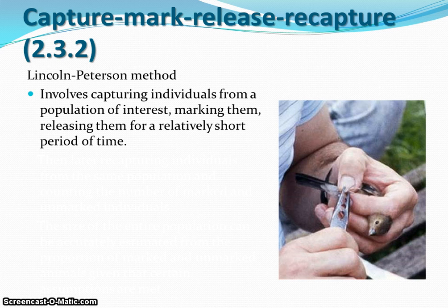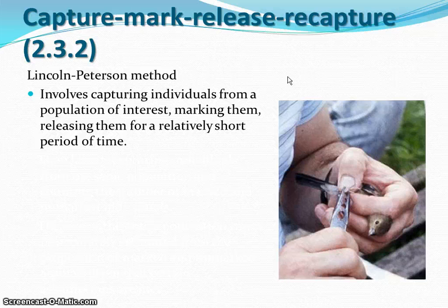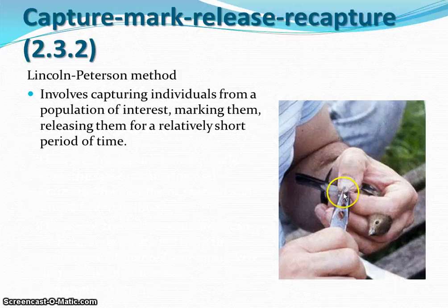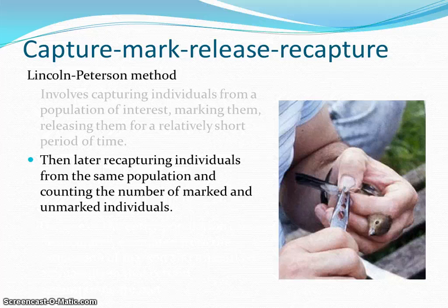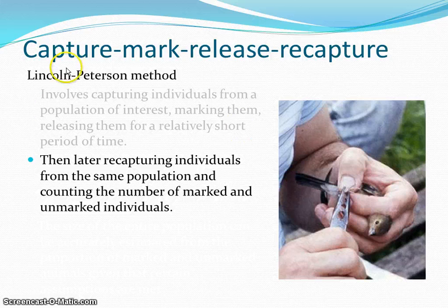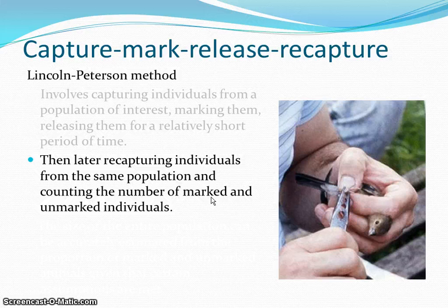This method involves capturing individuals from a population of interest — for instance, this bird — and marking them with some sort of tag. Right here, a tag is being fixed to the bird's foot, which is not going to injure them. Then you release them back into the population for a period of time. So I capture, say, 20 birds, mark all of them, release them back, and then maybe a couple days later, recapture another set — say 25 individuals. Then I count how many of those 25 had tags versus were unmarked.